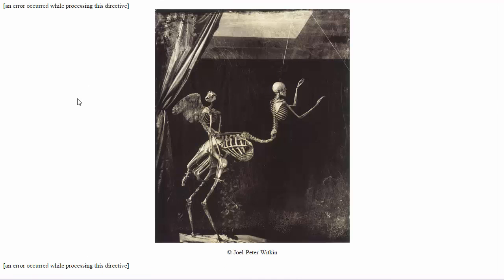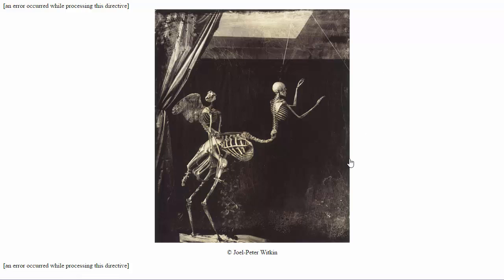Joel Peter Witkin is a total madman. The guy takes real skeletons, real props, and uses a lot of techniques on his negatives — scratching, filters, different grungy techniques — to make some really dark surrealistic images.